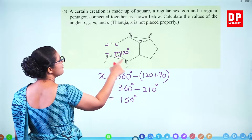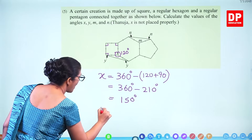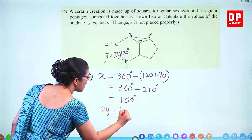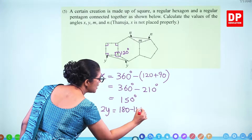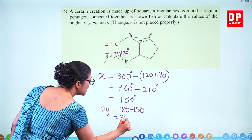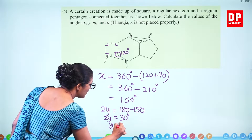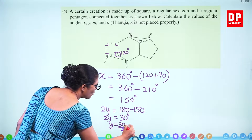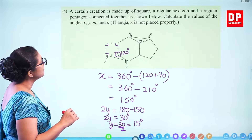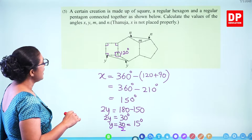If x is 150 degrees, find y. 2y plus 150 equals 180 — sum of angles in a triangle is 180. So 2y equals 30, meaning y equals 15 degrees. Now we need to find m and n.